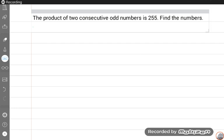First of all, we will do a conceptual discussion. Read this question carefully with me. The product of two consecutive odd numbers is 255. Find the numbers. So first we will learn how to find two consecutive odd numbers.